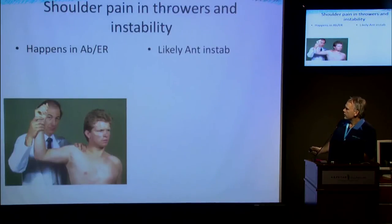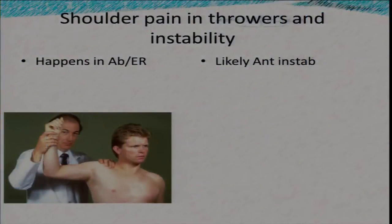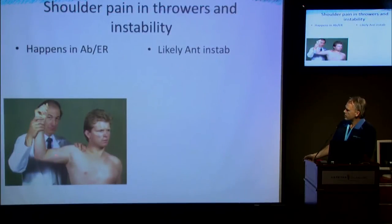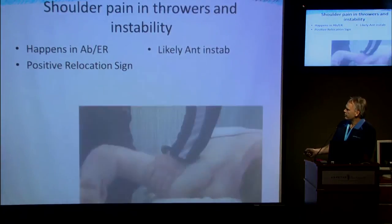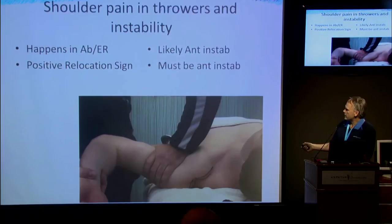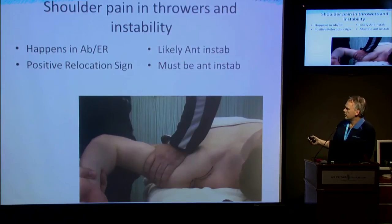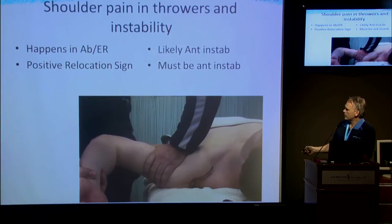The first controversy I want to discuss relates to what I think is a commonly held misconception: that because throwers get their pain in this position — which is also where we see anterior shoulder instability — what's going on with throwers is anterior instability. This is typically underscored by the fact that they're seen to have a positive relocation sign, and therefore it must be anterior instability. I also want to talk about the labrum and the role of cuff pathology, and all three of these things interweave.